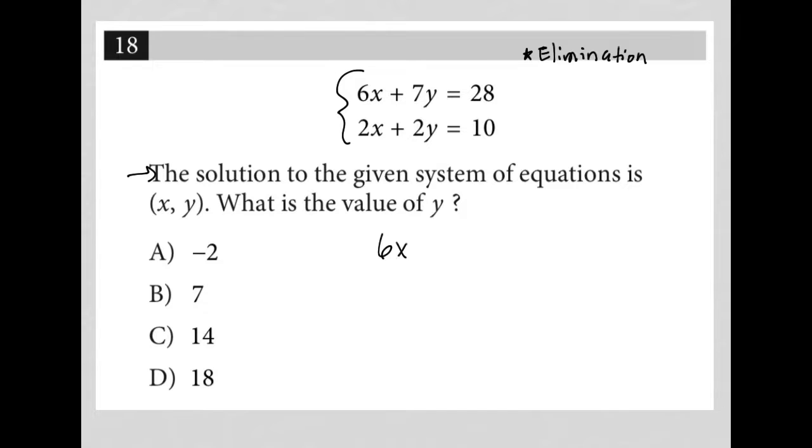If I take my two equations, 6x + 7y = 28 and 2x + 2y = 10, and I ask myself the question, what could I multiply by so that my x terms could cancel out? Because I'm trying to find the value of y,